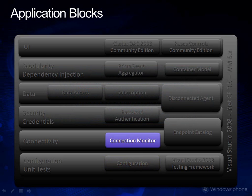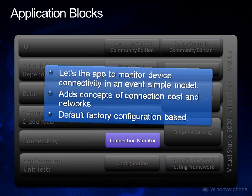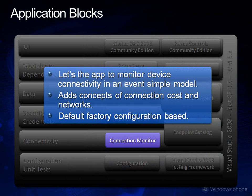The connection monitor allows your application to be aware of the connectivity state of the device. You can use it to check if the device is connected, what the current connections are, and what network they are connected to. It also lets your application know when the device connectivity state has changed so you can adapt your behavior accordingly. You can even make decisions based on what network you are connected to or how expensive your current connection is, and this information can be configured by default in your configuration file.